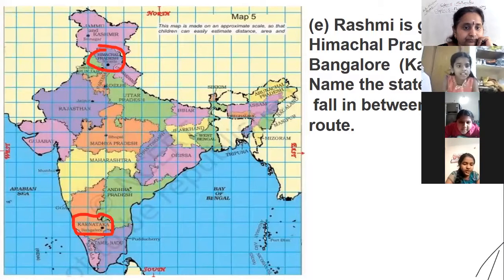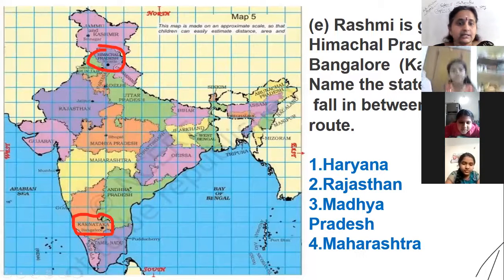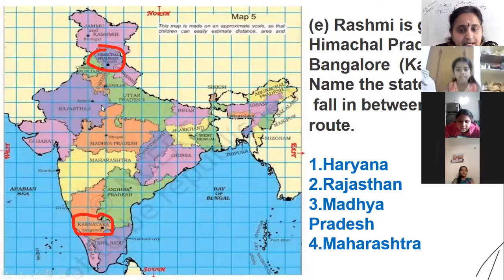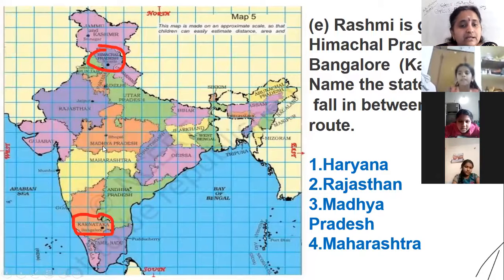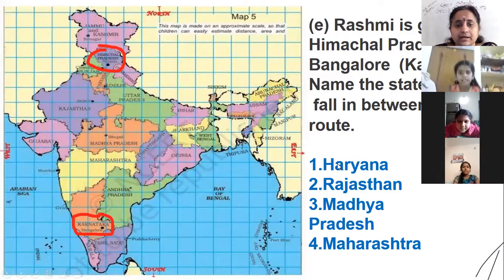Students answer: Delhi, Madhya Pradesh, Maharashtra, Haryana, Rajasthan. The teacher confirms: Madhya Pradesh and Maharashtra. Very good!